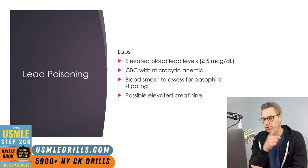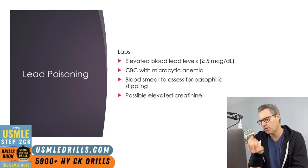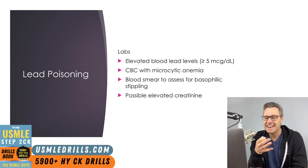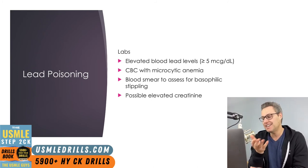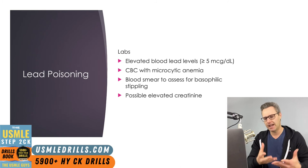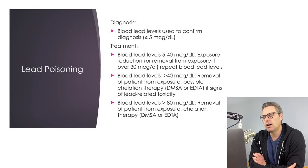Labs to perform include a CBC that might show microcytic anemia, and blood lead levels can be measured to assess for lead elevations. If anemia is present, a blood smear should be performed to assess for basophilic stippling — while not always present and seen in other pathologies, its presence is consistent with lead poisoning. If lead nephropathy is present, creatinine levels can also be elevated. Diagnosis is confirmed by blood lead levels, with an abnormal result being 5 micrograms per deciliter or higher.